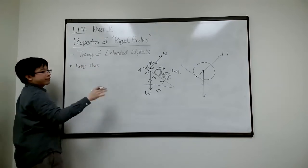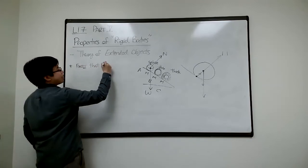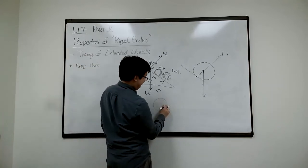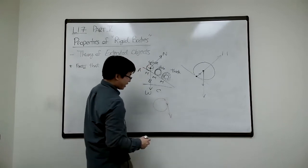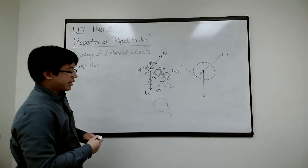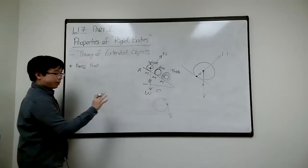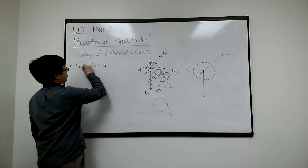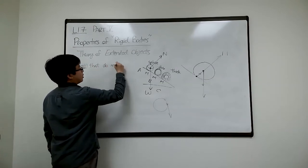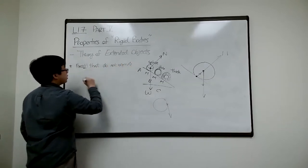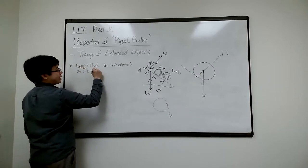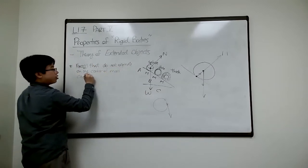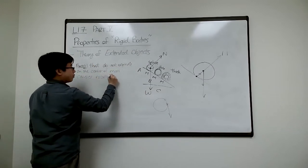So gravity is trying to pull it this way. It's trying to move this point down here. And this is trying to push that point up. What will it do? It will rotate about somewhere halfway like this. So it will start to rotate. So now what we have concluded, if we can write this down is forces that don't act from the center of mass will cause rotation.